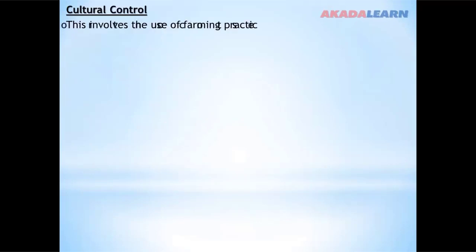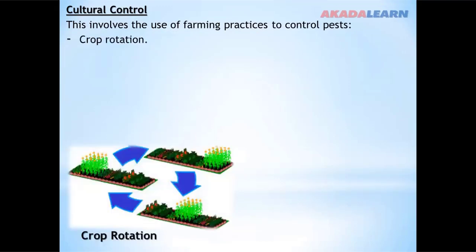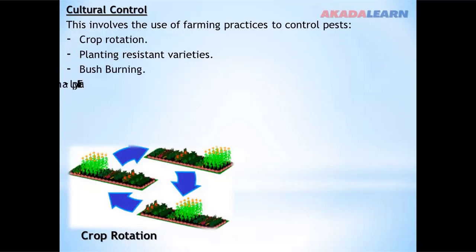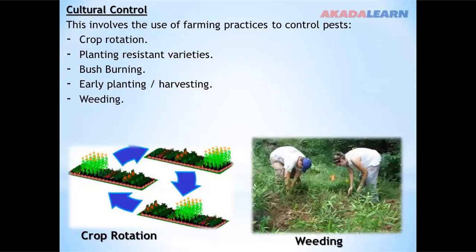Cultural control involves the use of farming practices to control pests. These include crop rotation, planting resistant varieties, bush burning, early planting or early harvesting, weeding, and close planting practices.